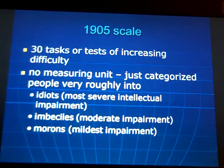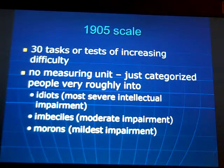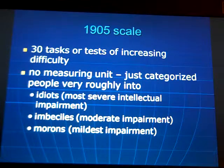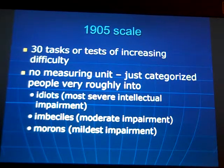The first scale in 1905 had 30 tasks or tests of increasing difficulty. He categorized people roughly into three categories — and these were clinical terms, by the way, not the casual insults we throw around. Idiots denoted the most severe intellectual impairment; imbeciles, moderate impairment; and morons, the mildest impairment. Those were the differing levels of impairment, and they were actually clinical terms.